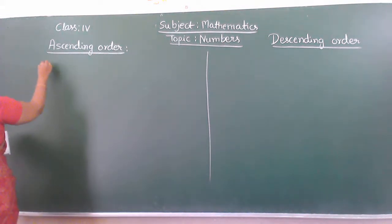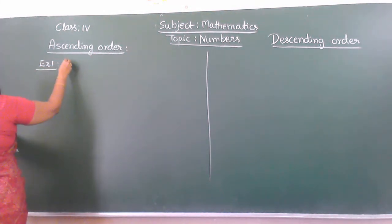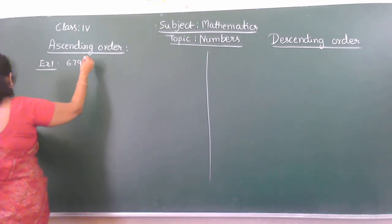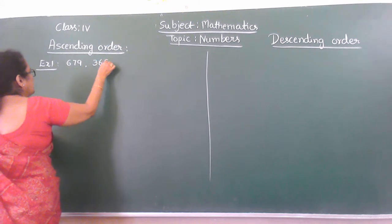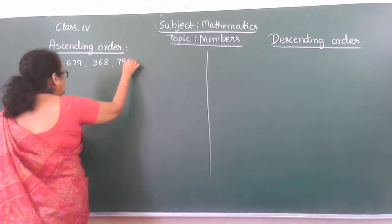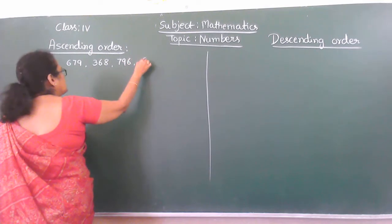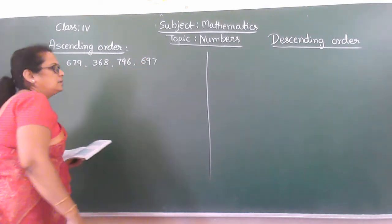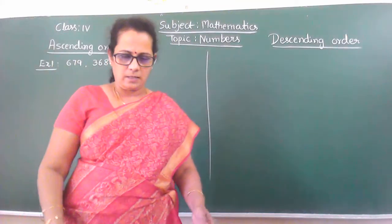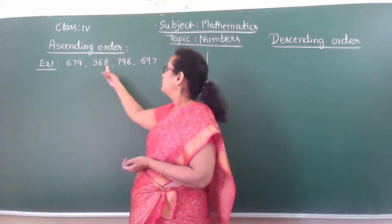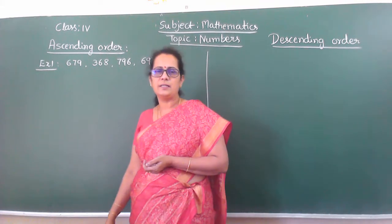Example 1. First I will take 3-digit numbers: 679, 368, 796, then 697. So these are the 3-digit numbers. Write these four 3-digit numbers.